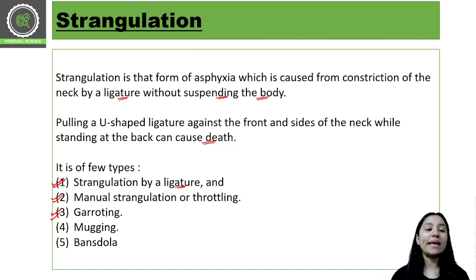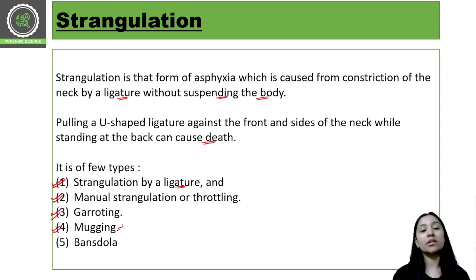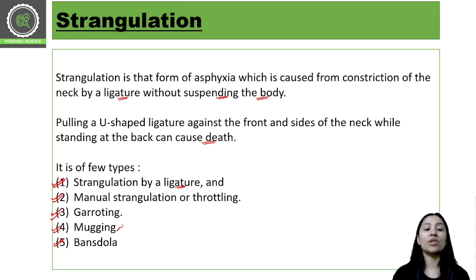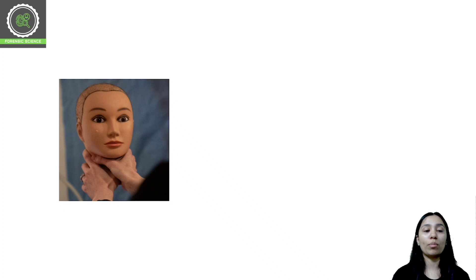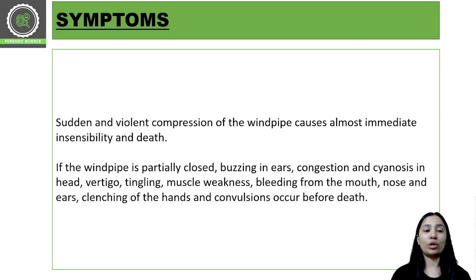Fourth is mugging, which is similar to manual strangulation or throttling but occurs in public places involving multiple people. Fifth is bansdola, in which two sticks are used — if someone's neck is pressed between two sticks, it comes under bansdola. The most common types of strangulation are ligature strangulation and throttling, also called manual strangulation.